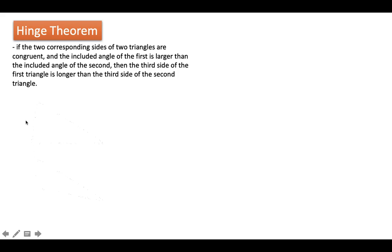The Hinge Theorem states that if the two corresponding sides of two triangles are congruent and the included angle of the first triangle is larger than the included angle of the second triangle, then it follows that the third side of the first triangle is longer than the third side of the second triangle.